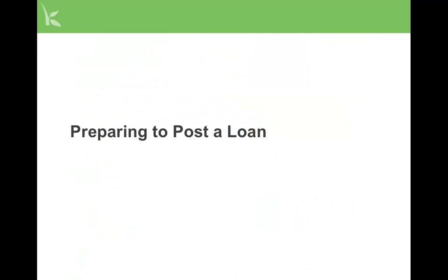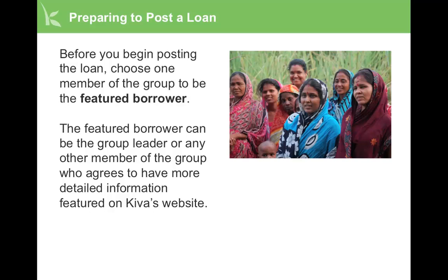Now that we've seen how a loan looks once it is published, let's learn about the process of posting a new loan. Before you begin posting a loan, choose one member of the group to be the featured borrower. The featured borrower can be the group leader or any other member of the group who agrees to have more detailed information featured on Kiva's website.